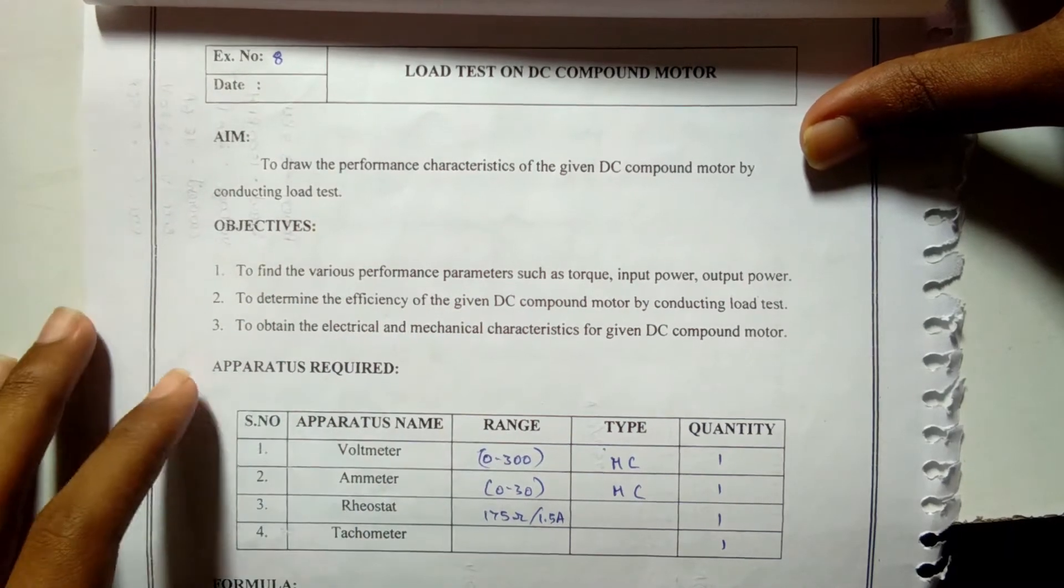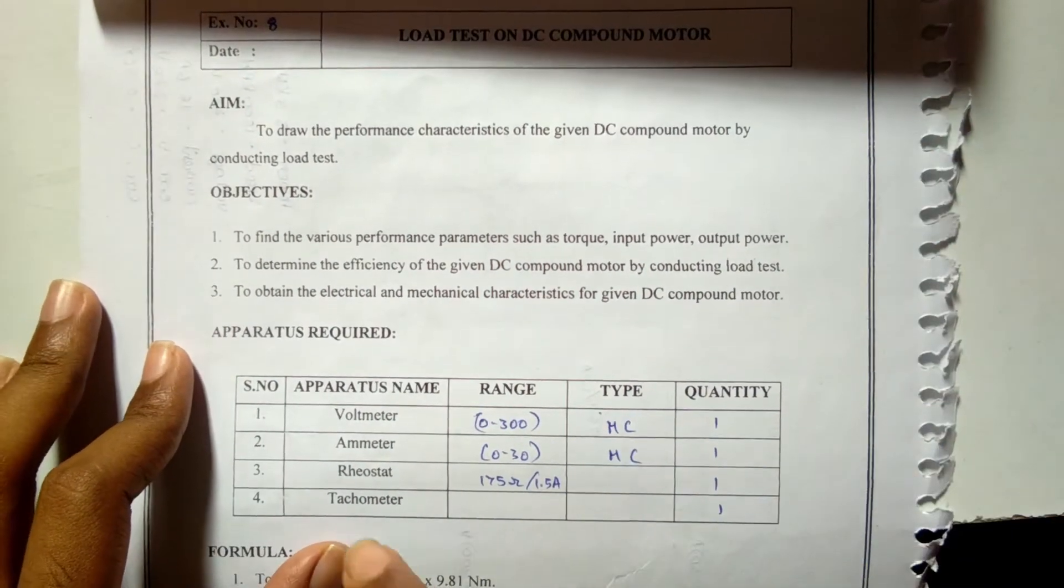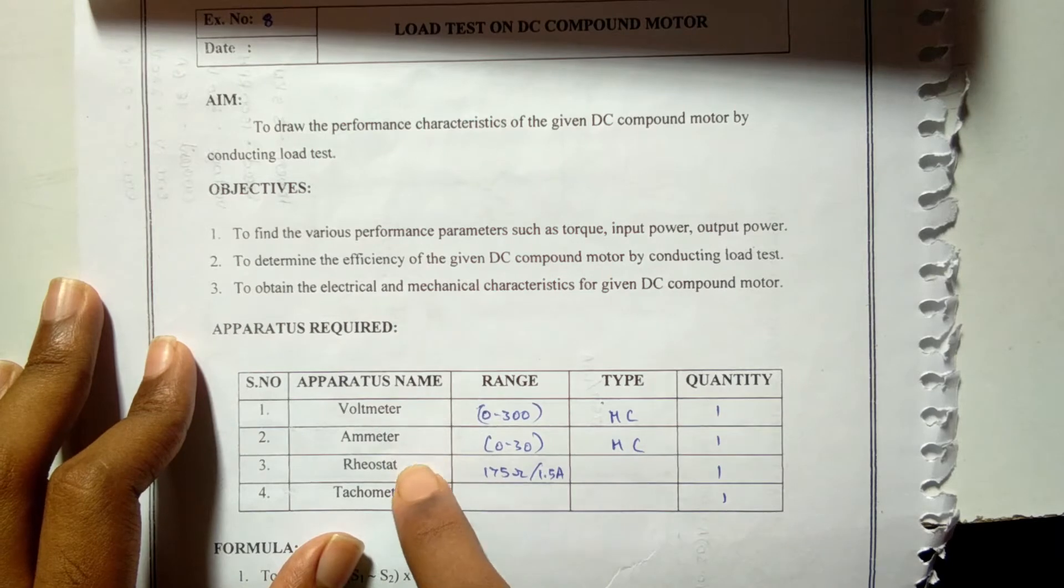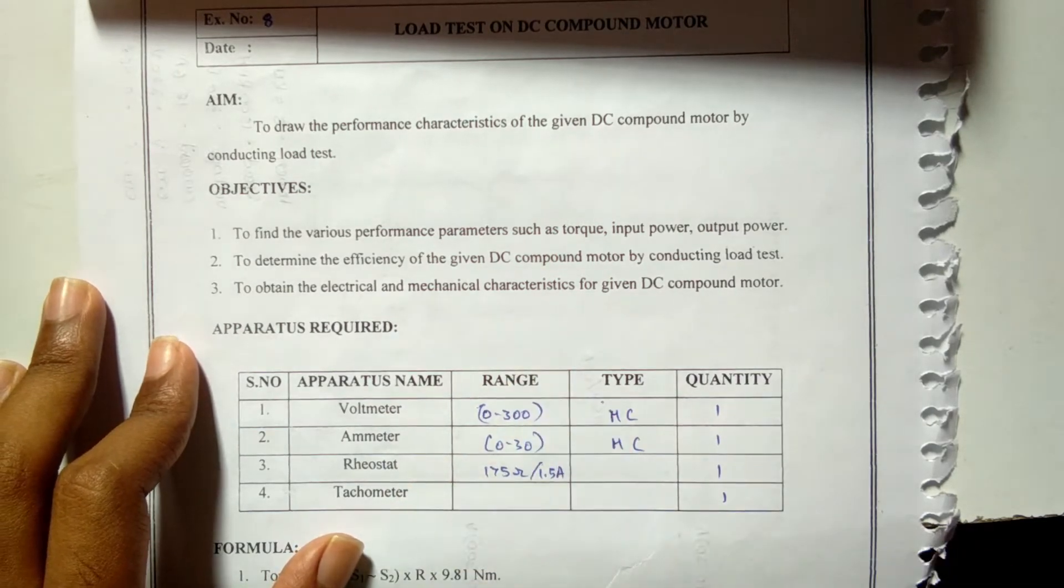The apparatus required are voltmeter, ammeter, rheostat, and tachometer in the corresponding ranges.